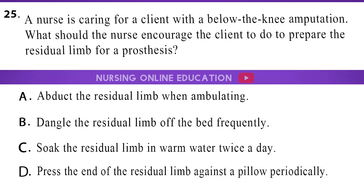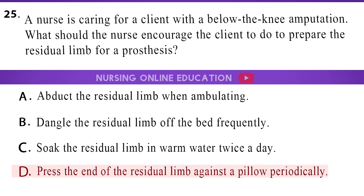Question 25: A nurse is caring for a client with a below-the-knee amputation. What should the nurse encourage the client to do to prepare the residual limb for a prosthesis? A. Abduct the residual limb when ambulating. B. Dangle the residual limb off the bed frequently. C. Soak the residual limb in warm water twice a day. D. Press the end of the residual limb against a pillow periodically. The answer is option D: Press the end of the residual limb against a pillow periodically.